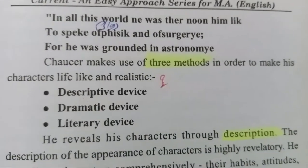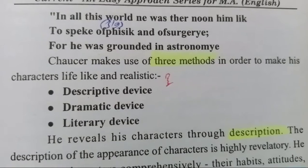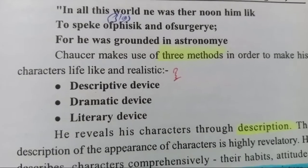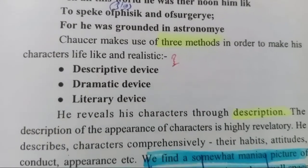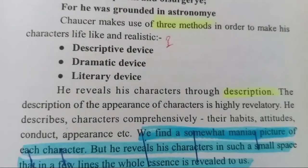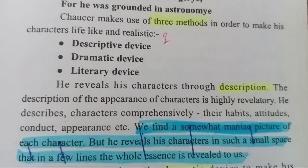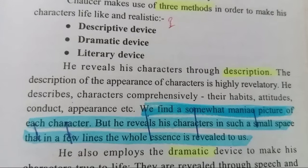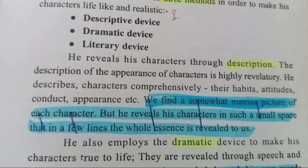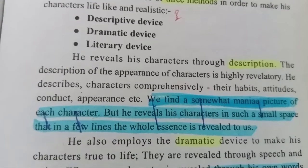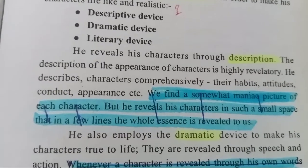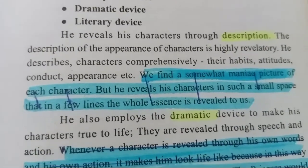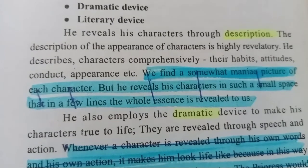Chaucer makes use of three methods in order to make his characters lifelike and realistic. First, he reveals his characters through description — وصف بیان کے ذریعے. The description of the appearance of the characters is highly revelatory. He describes characters comprehensively: their habits, attitudes, conduct, appearances, etc.